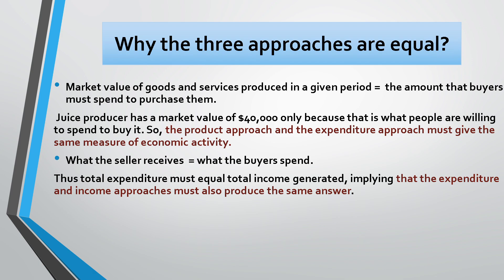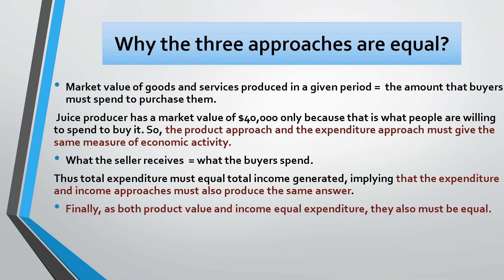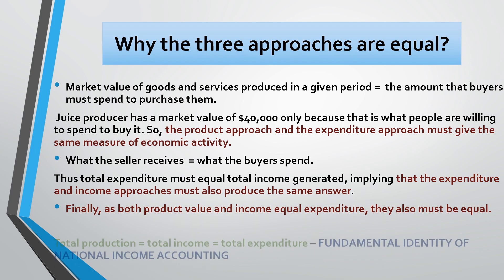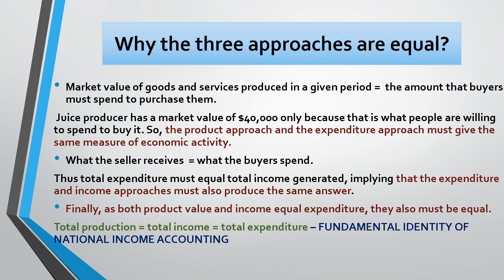Finally, since both product value and income equal expenditure, they also must be equal to each other. Because of the equivalence of the three approaches over any specified time period: total production = total income = total expenditure, where production, income, and expenditure are all measured in the same units, for example in dollars or rupees. This equation is called the fundamental identity of national income accounting and forms the basis for national income accounting.